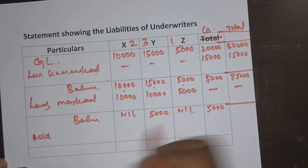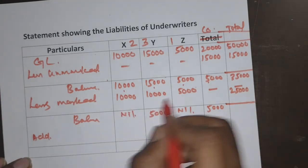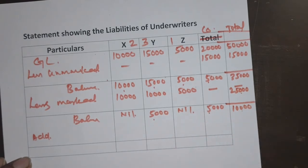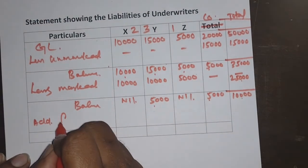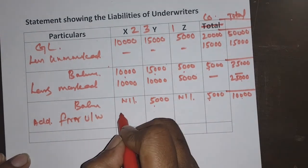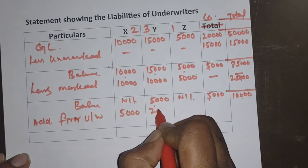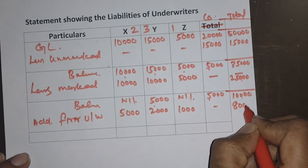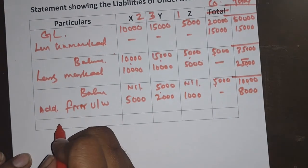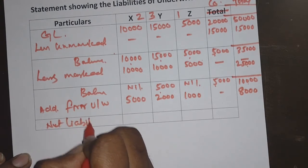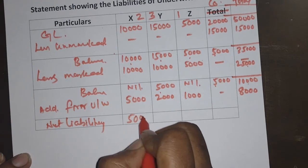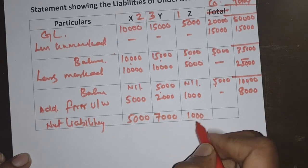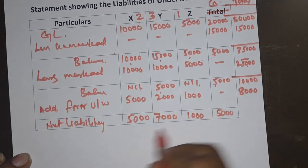Total balance is 35,000 minus 25,000 = 10,000, confirming 5,000 plus 5,000. Now add firm underwriting: X — 5,000, Y — 2,000, Z — 1,000, company — dash, overall 8,000. Therefore the net liabilities are: X = 5,000, Y = 7,000, Z = 1,000, Company = 5,000.